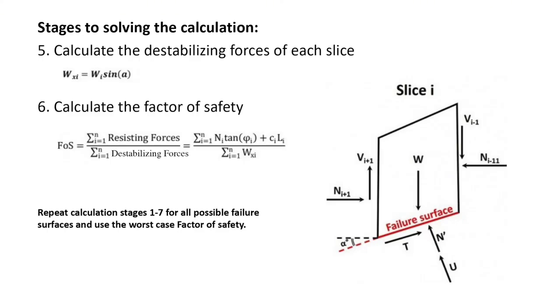Calculation stages one to seven should then be repeated for all possible failure surfaces of the slope. The worst case factor of safety is then adopted.